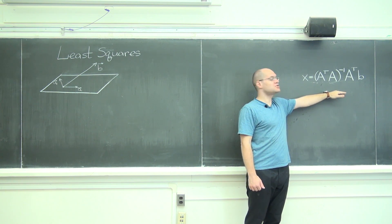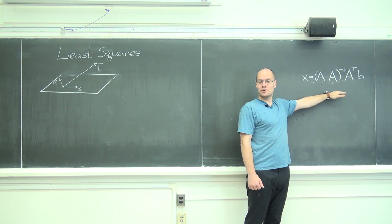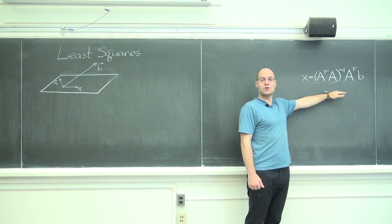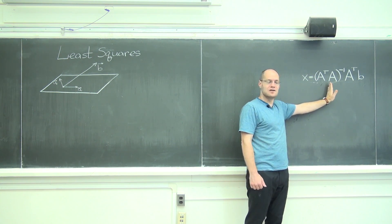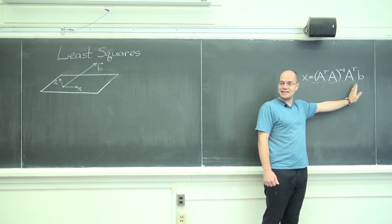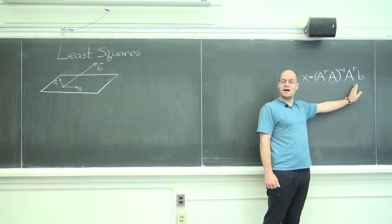In the case where you have way too many equations for the number of unknowns that you have, or in other words, the column space of the matrix is not rich enough to give us the right-hand side exactly, so you have to find the best possible solution.